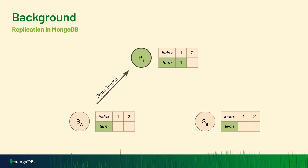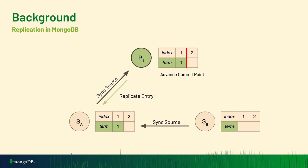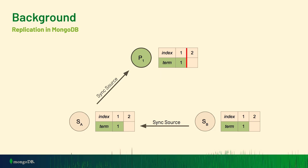Secondary A may choose the primary as its sync source — the node it fetches log entries from. Similarly, the other secondary may choose the first secondary as its sync source. The primary sends a log entry to the secondary, which inserts it into its log. Then the primary takes an action called advance commit point — the highest point in the log considered durable or committed. Up to that point, no log entries will be deleted or rolled back.